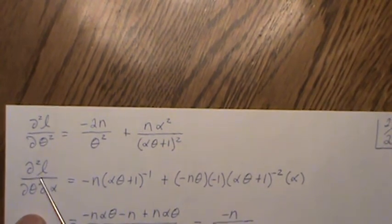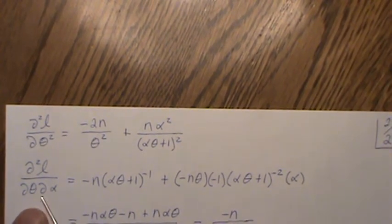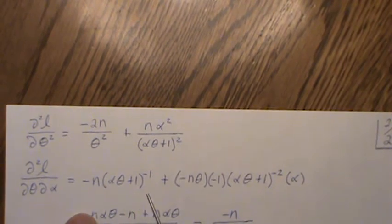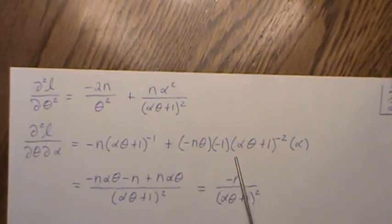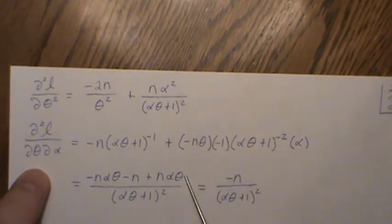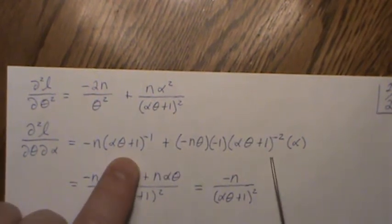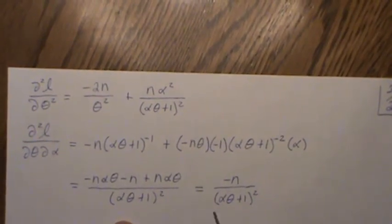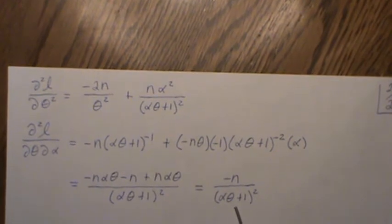Now, the partial with respect to theta, then alpha, is this. I'm not going to go over each step since we can't look at the previous page. But it's essentially this, so you can pause it and rewind if you need to, and it boils down to this.